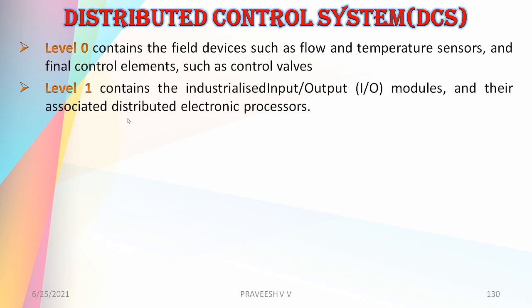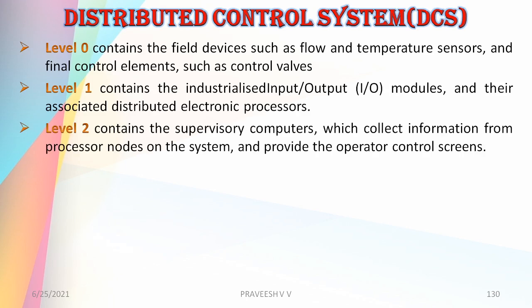Level 1 contains the industrial input/output modules and their associated distributed electronic processors. Level 2 contains the supervisory computers which collect information from the processor nodes on the system and provide the operator control screens.